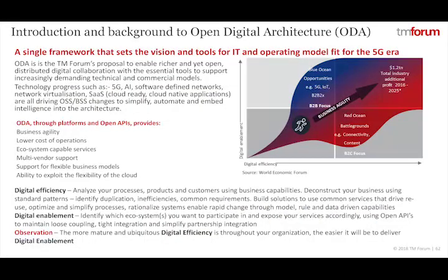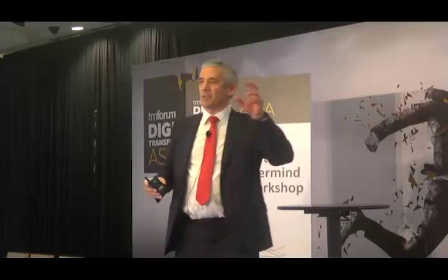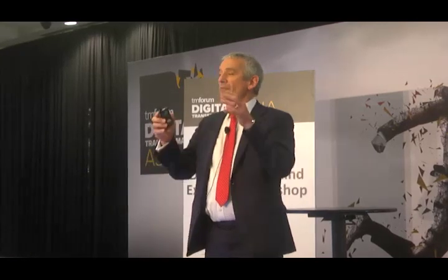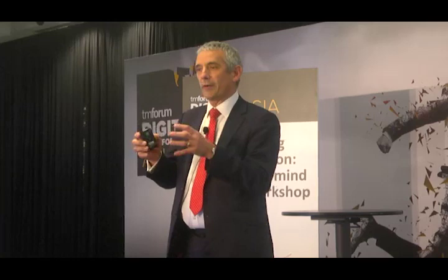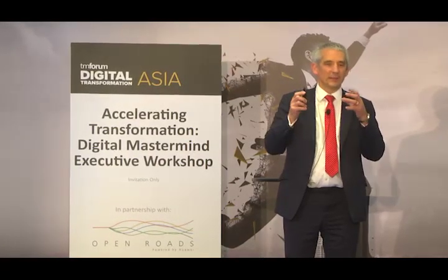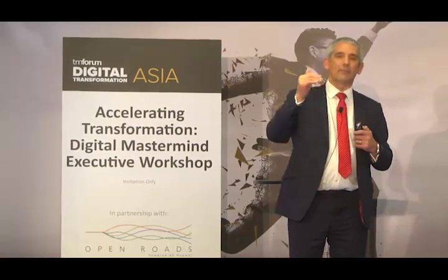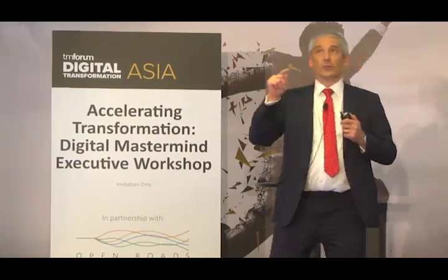For digital enablement, understand the ecosystems you want to participate in — this applies equally to vendors and service providers. Identify the business capabilities that are part of your core sweet spot, encapsulate those services, understand the pattern, and expose them as an open API. Suddenly you've enabled your business to participate in somebody's ecosystem without rewriting all your software. The very first open API I built when working in a CSP was on a mainframe MVS component built in 1984, which we exposed as an API for reuse when launching broadband in the UK in 2004.